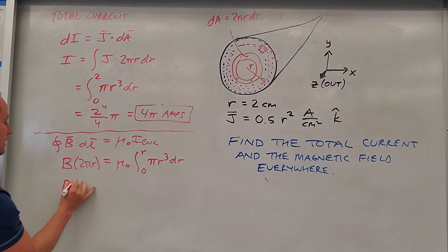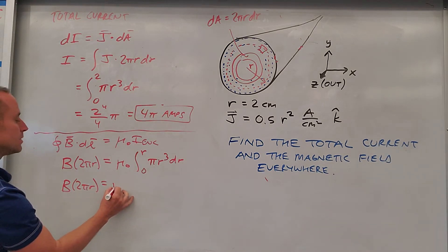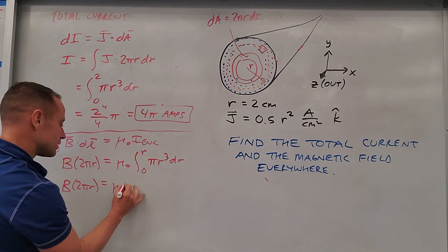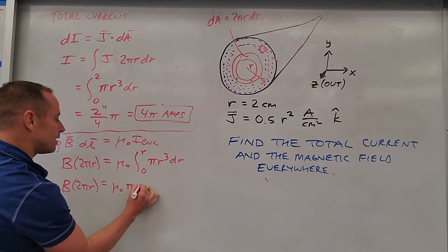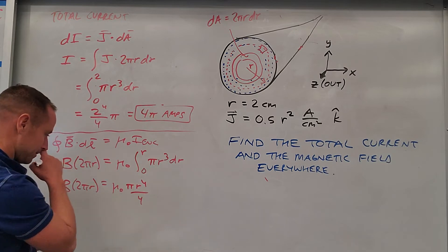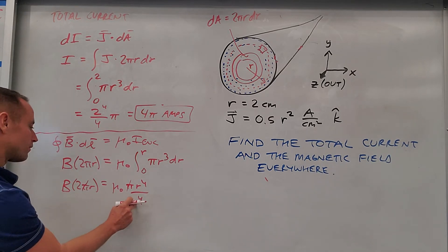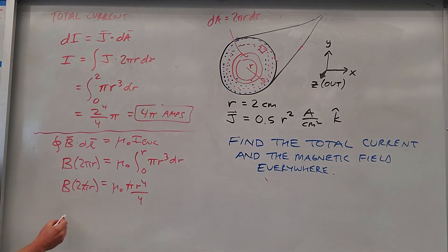So we've got B times 2 pi R equals mu naught. Now this is going to integrate up to R to the 4th over 4. So this will be mu naught pi R to the 4th divided by 4. Looks like the pi's cancel. And what else will happen? When we divide this 2 over, we'll get an 8 downstairs, and the R exponent will reduce by 1. So you'll get B is mu naught R cubed over 8 in the phi hat direction.